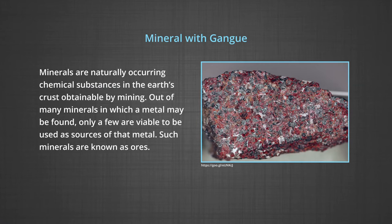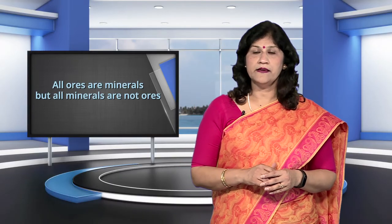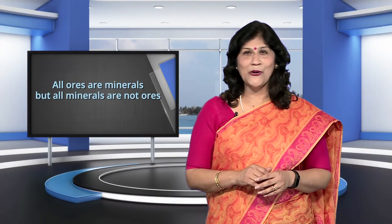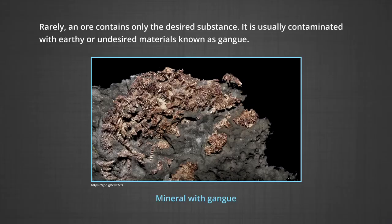For obtaining a particular metal, first we look for the minerals. A mineral is a naturally occurring chemical substance in the earth's crust, obtainable by mining. Out of the many minerals in which a metal may be found, only a few are viable to be used as a source of that metal. Such minerals are known as ores. Thus, we say that all ores are minerals, but all minerals are not ores. Rarely an ore contains only the desired substance; it is usually contaminated with earthy or undesired materials known as gangue.